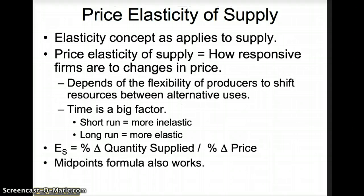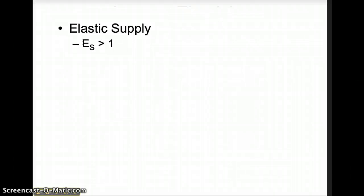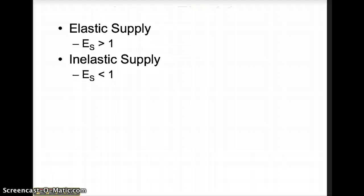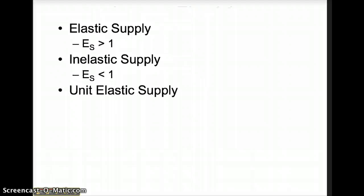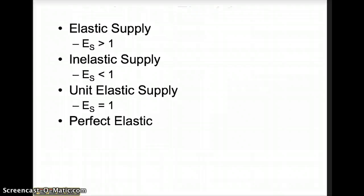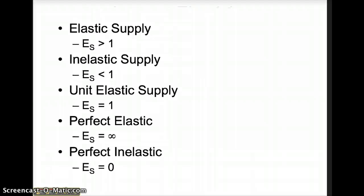Elastic supply occurs when firms are responsive to price changes — the coefficient will be greater than 1. Inelastic supply occurs when firms are relatively unresponsive to price changes and the coefficient will be less than 1. Unit elastic supply occurs when the coefficient equals 1. The extreme case of perfectly elastic supply occurs when the coefficient equals infinity, and the extreme case of perfectly inelastic supply occurs when the coefficient equals 0.